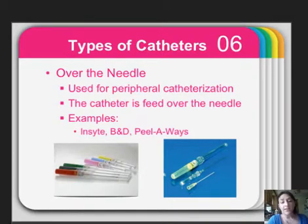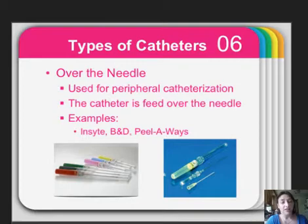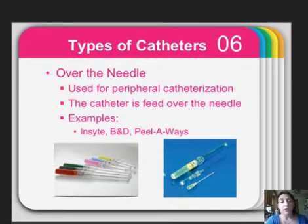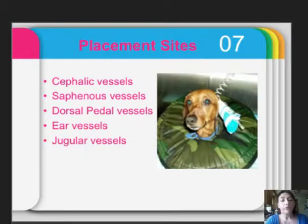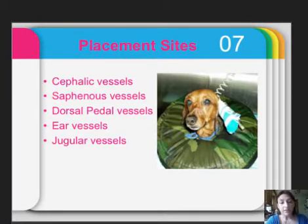These come in different sizes ranging from 24 up to 16 gauge. We generally use an 18 to 22 gauge needle. 24-gauge are for extreme emergencies or for small neonate kittens or puppies. Placement sites include the cephalic vessels, the saphenous vessels, dorsal-pedal vessels, ear vessels, or jugular vessels, depending on the type of catheter used.